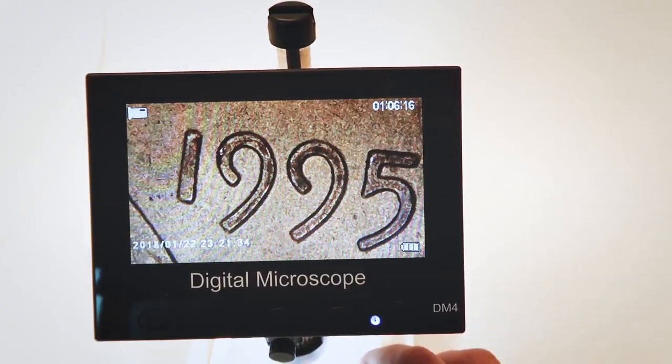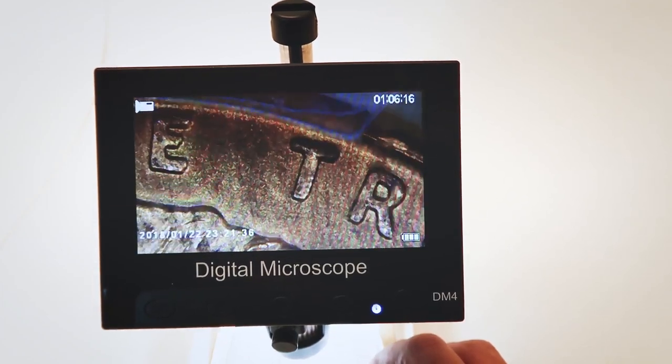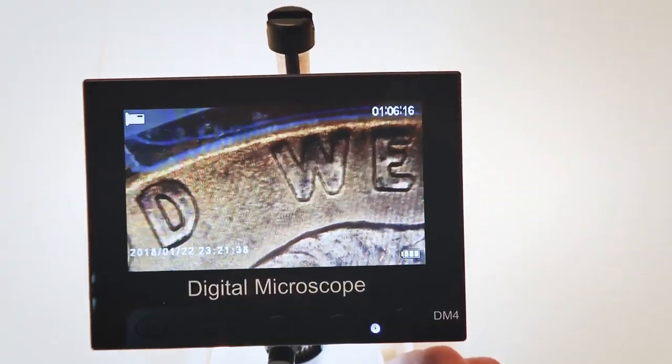So this is the 1995 again, that's what we want to look for on the 1995, doubling on the front of the coin, really there on God, really noticeable there.